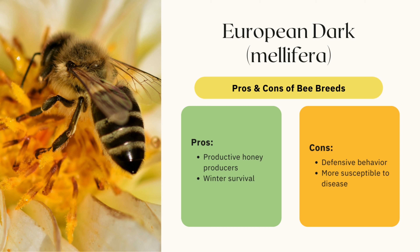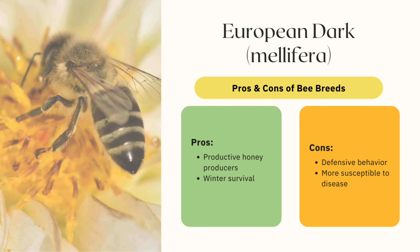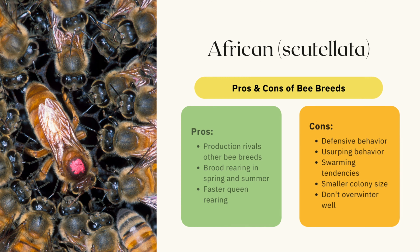Next, we have the European dark bee, or Apis mellifera mellifera, commonly known as German bees, black bees, or dark bees because of their darker abdomen. This breed originally came from Northern Europe. They tend to be a little larger than some of the other honeybee breeds — measurably so. They've become mostly out of favor due to defensive behavior and susceptibility to disease, which is why they were mainly replaced by Carniolan and Italian genetics in the United States.